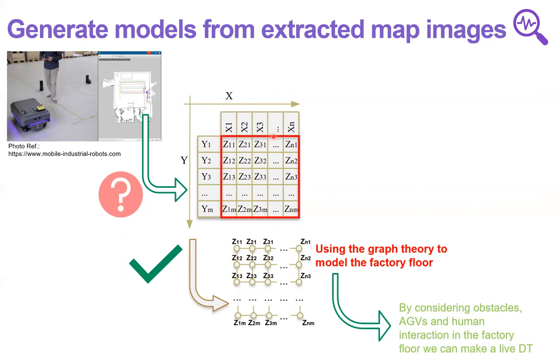If you have the borders, if you have information about the obstacles in the environment, then we can generate the graph model for that environment, which the nodes in this model can show the zones. And the edges can show the connection between zones.